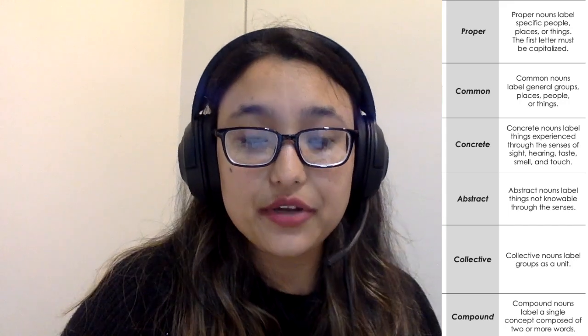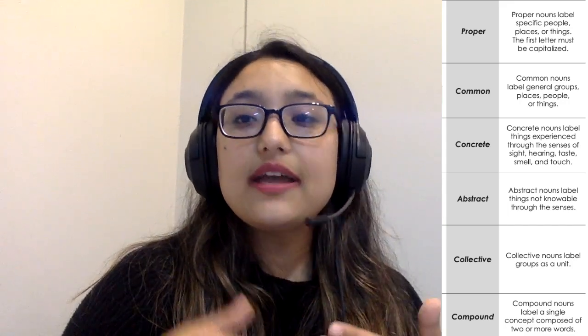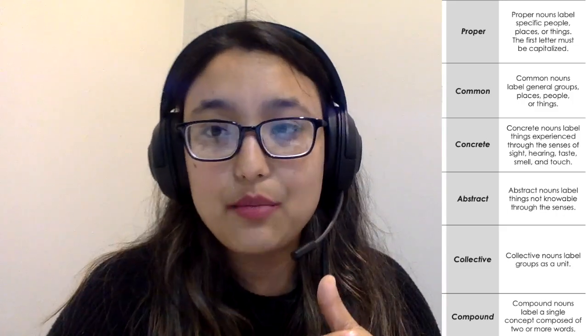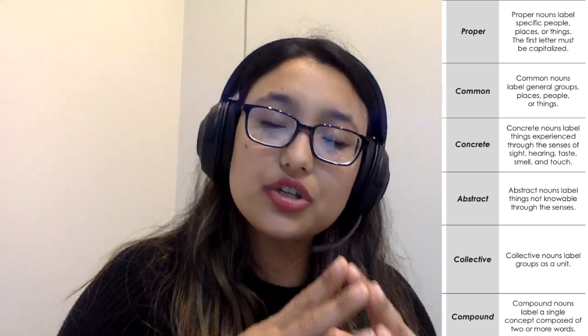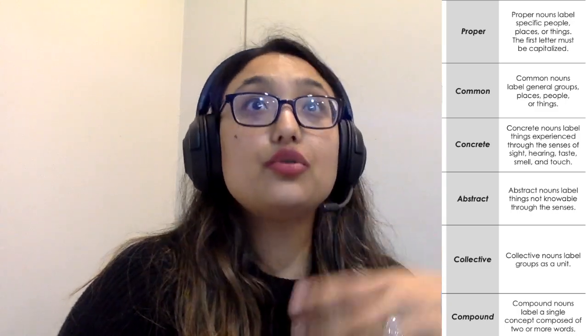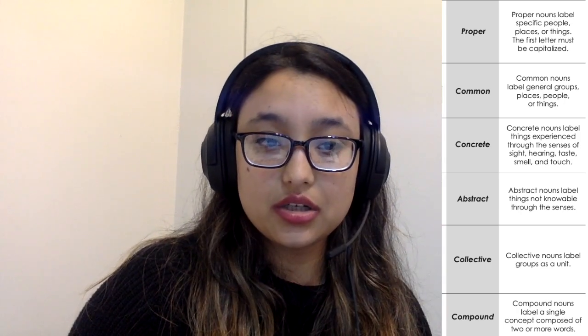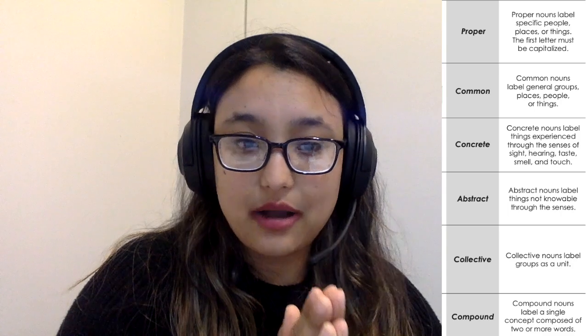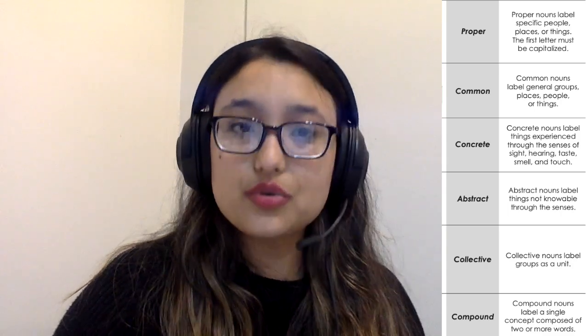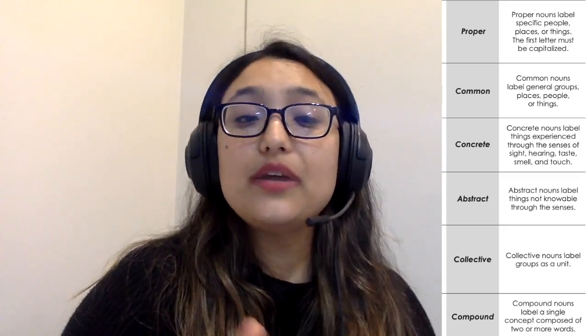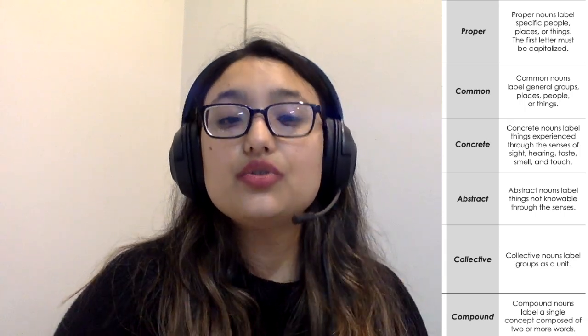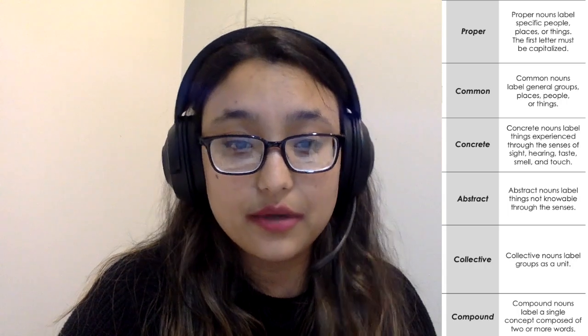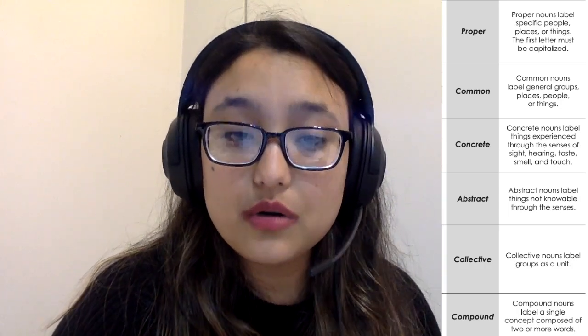Next comes compound nouns. A compound noun is more than one word together - for example, 'suntan lotion' - lotion or cream is a noun, but suntan lotion together becomes a compound noun. Or 'car door,' 'kitchen window' - the kitchen window. A compound noun is composed of two or more words. Plural and singular nouns: singular means one and plural means more than one.